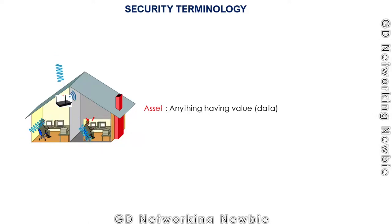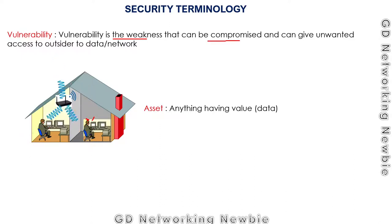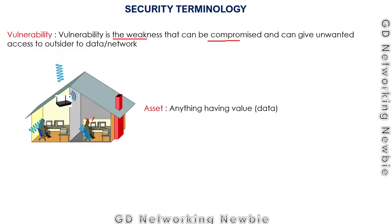If this data is not encrypted, it can be detected by anyone — we call this a vulnerability. Vulnerability means this is a weakness, and that weakness can be compromised. Compromised means someone can receive this signal and steal our data, destroy it, or at least eavesdrop on what we are sending. This weakness is called a vulnerability.